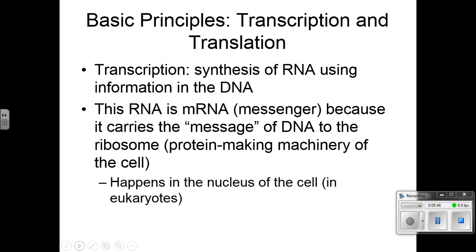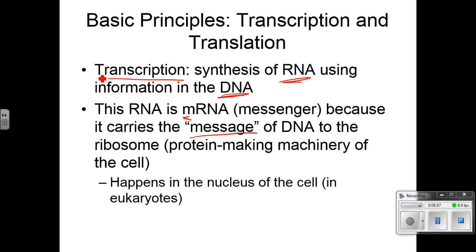Transcription is where RNA is built from the information in the DNA. This RNA is mRNA, or messenger RNA, because it carries the message of DNA to the ribosome — that's where we build the proteins. Transcription happens in the nucleus in eukaryotic cells. In prokaryotic cells there is no nucleus, so it happens in the nucleoid region.